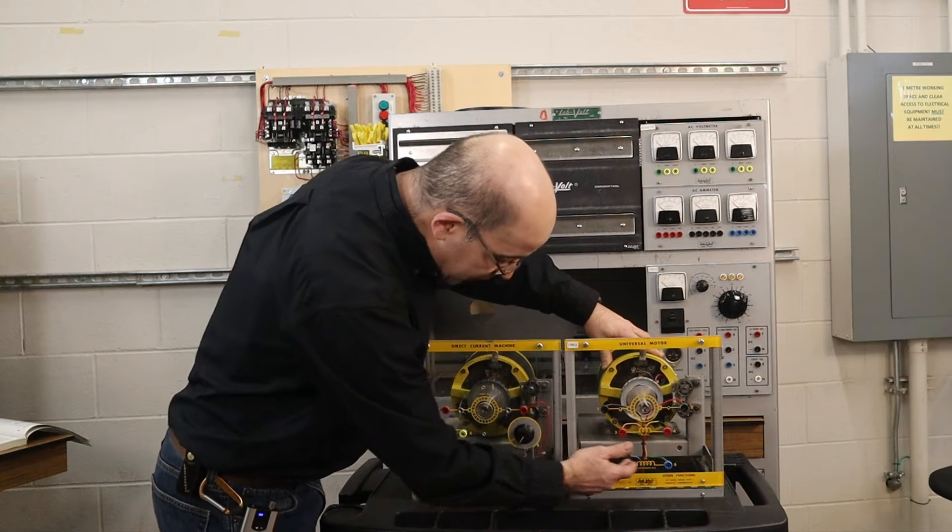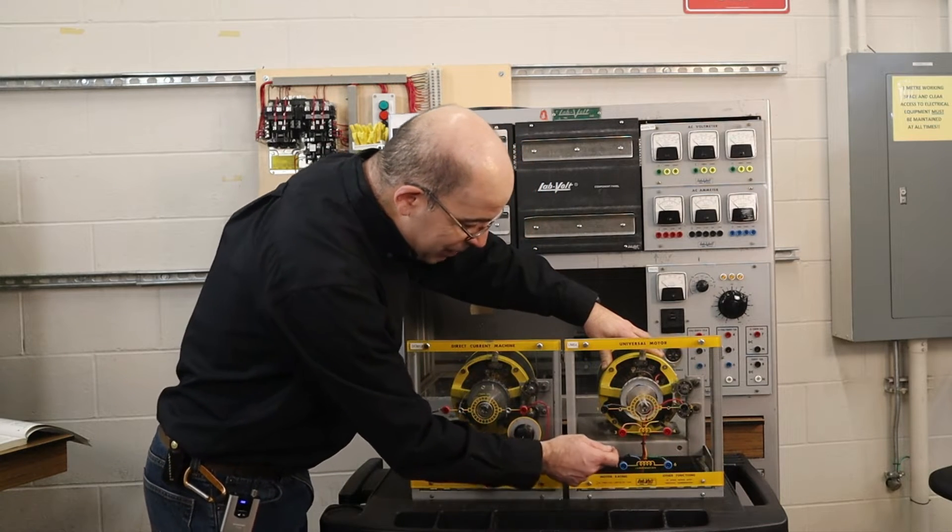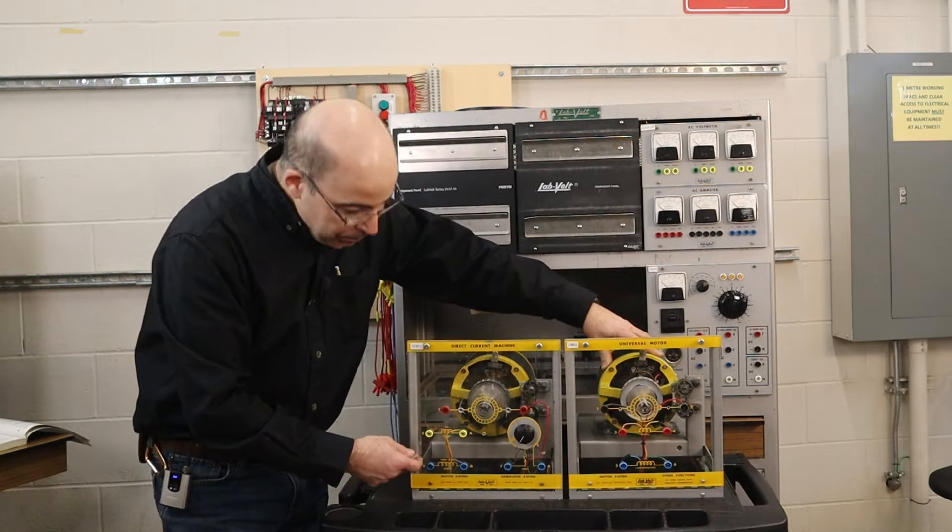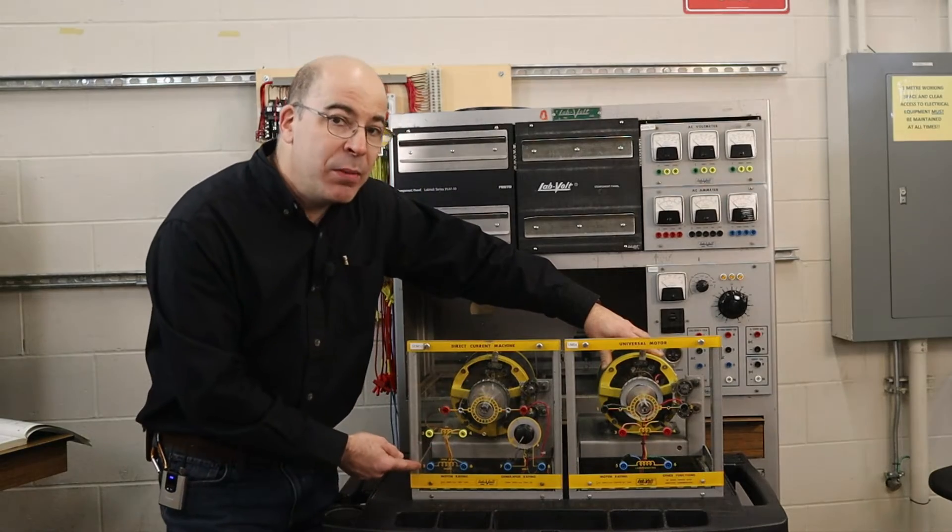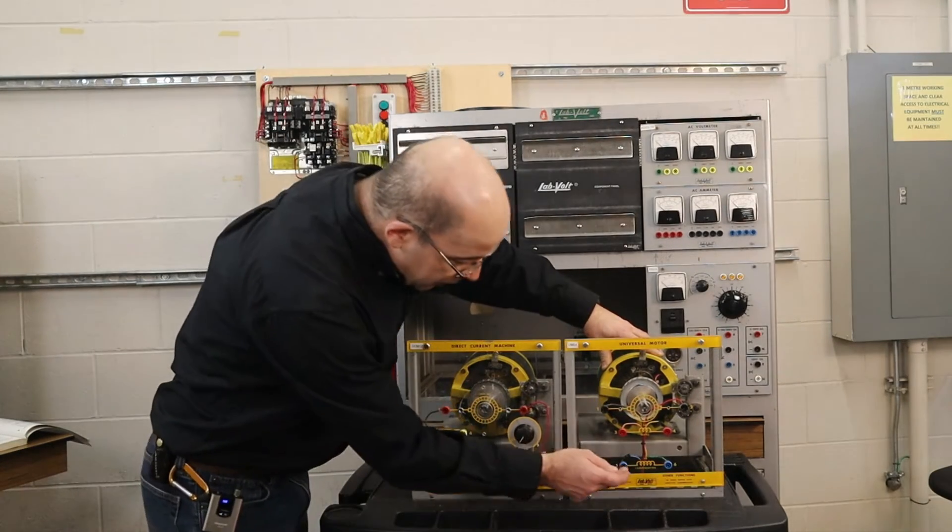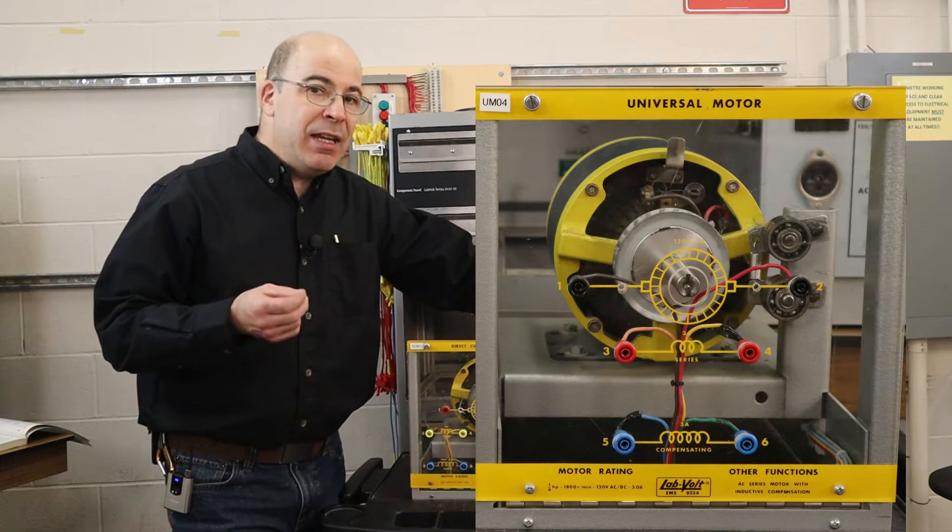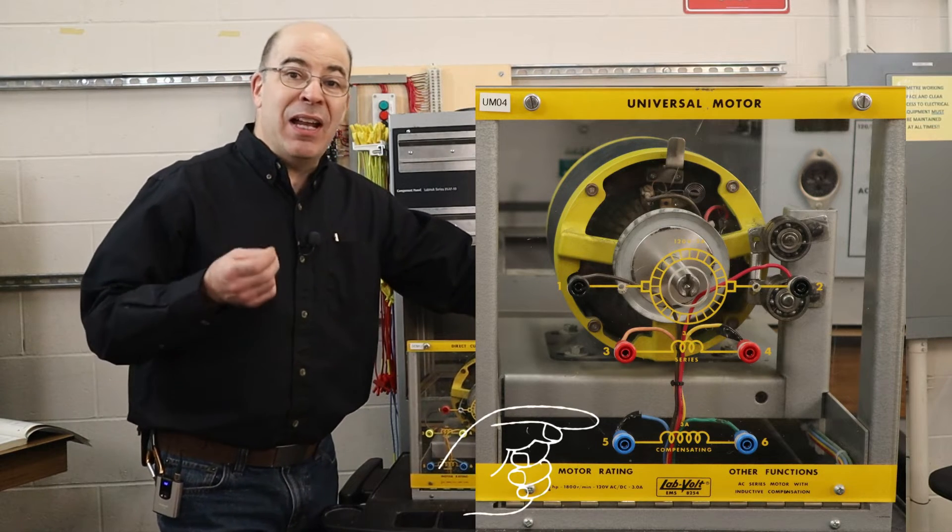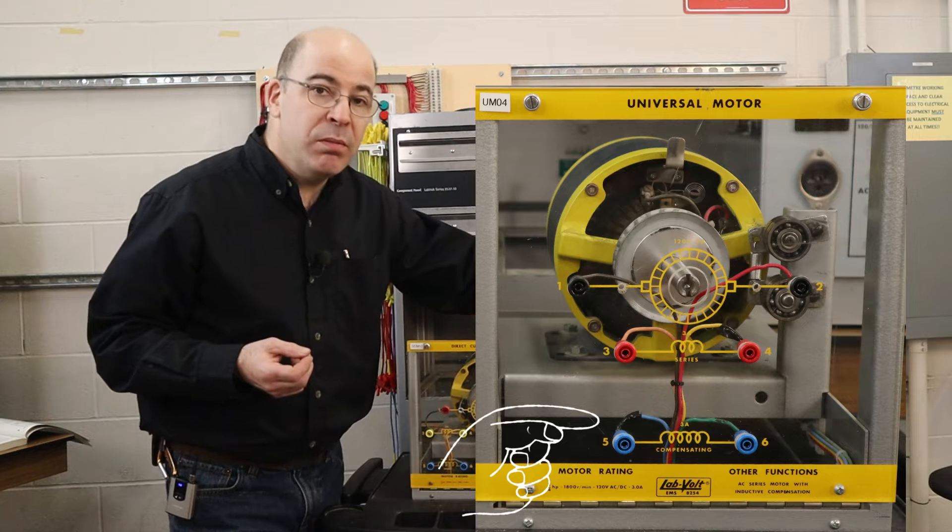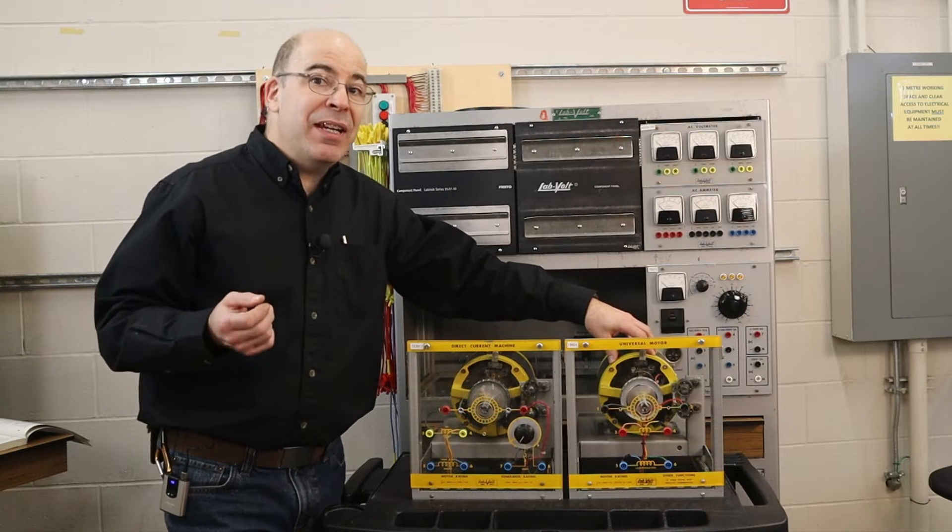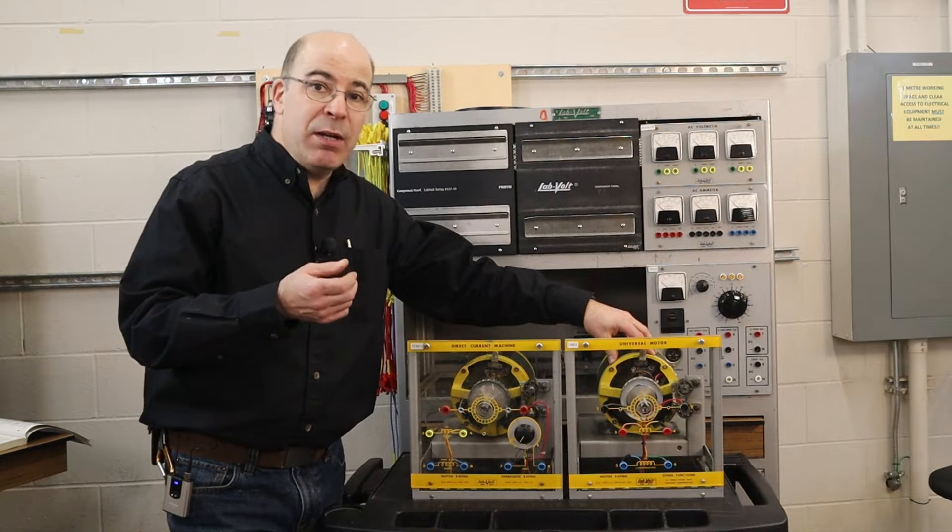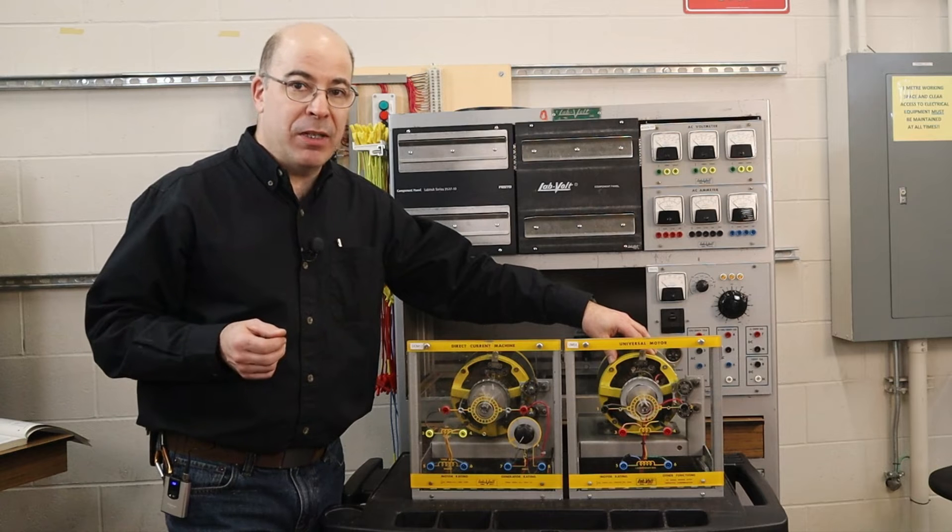Down here what differentiates the AC machine from the DC machine is that the DC machine has what we call a shunt field. The AC machine has a compensator winding, and it is the compensator winding that allows the universal motor to operate either on an AC power supply or with a DC power supply.